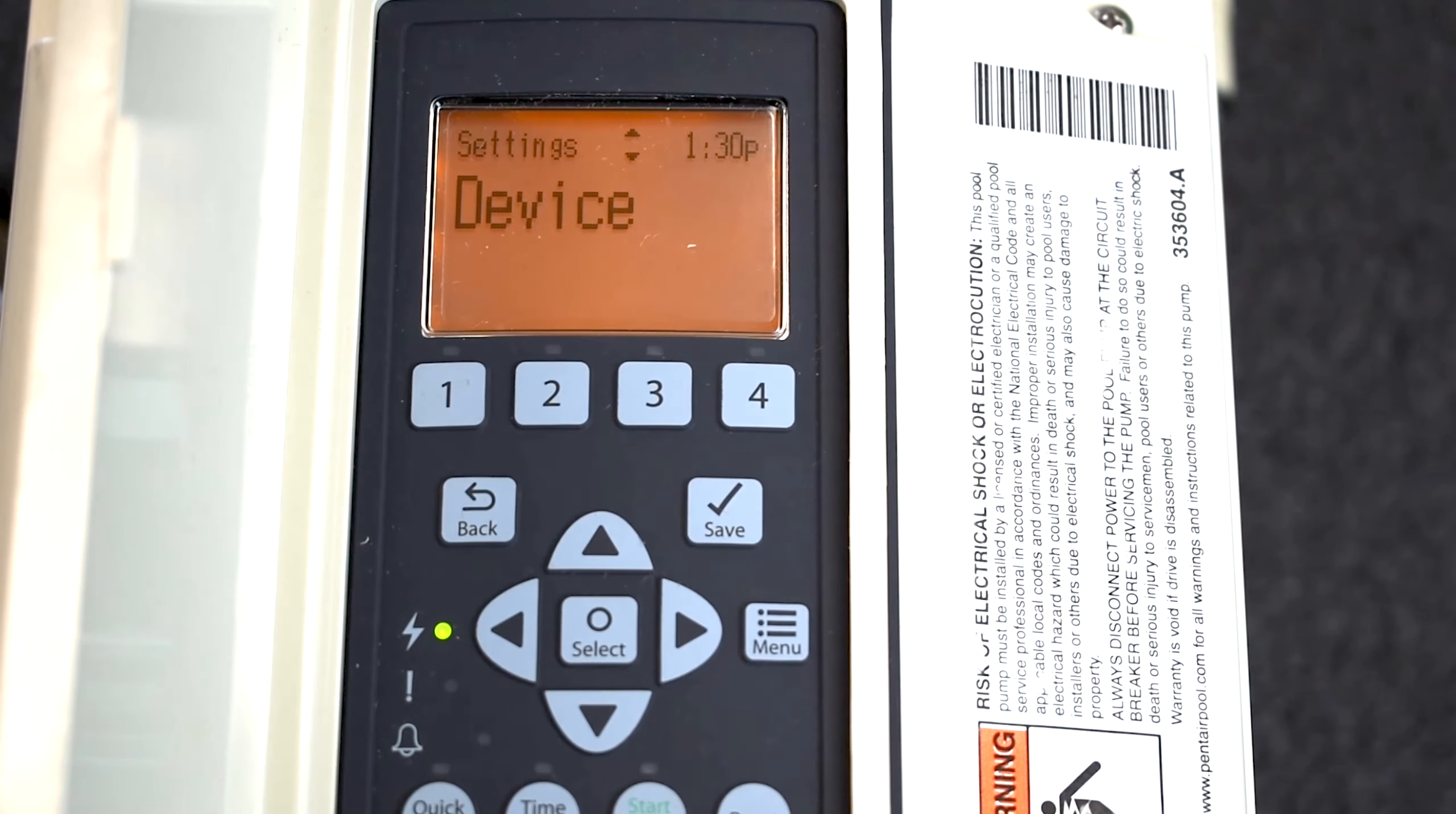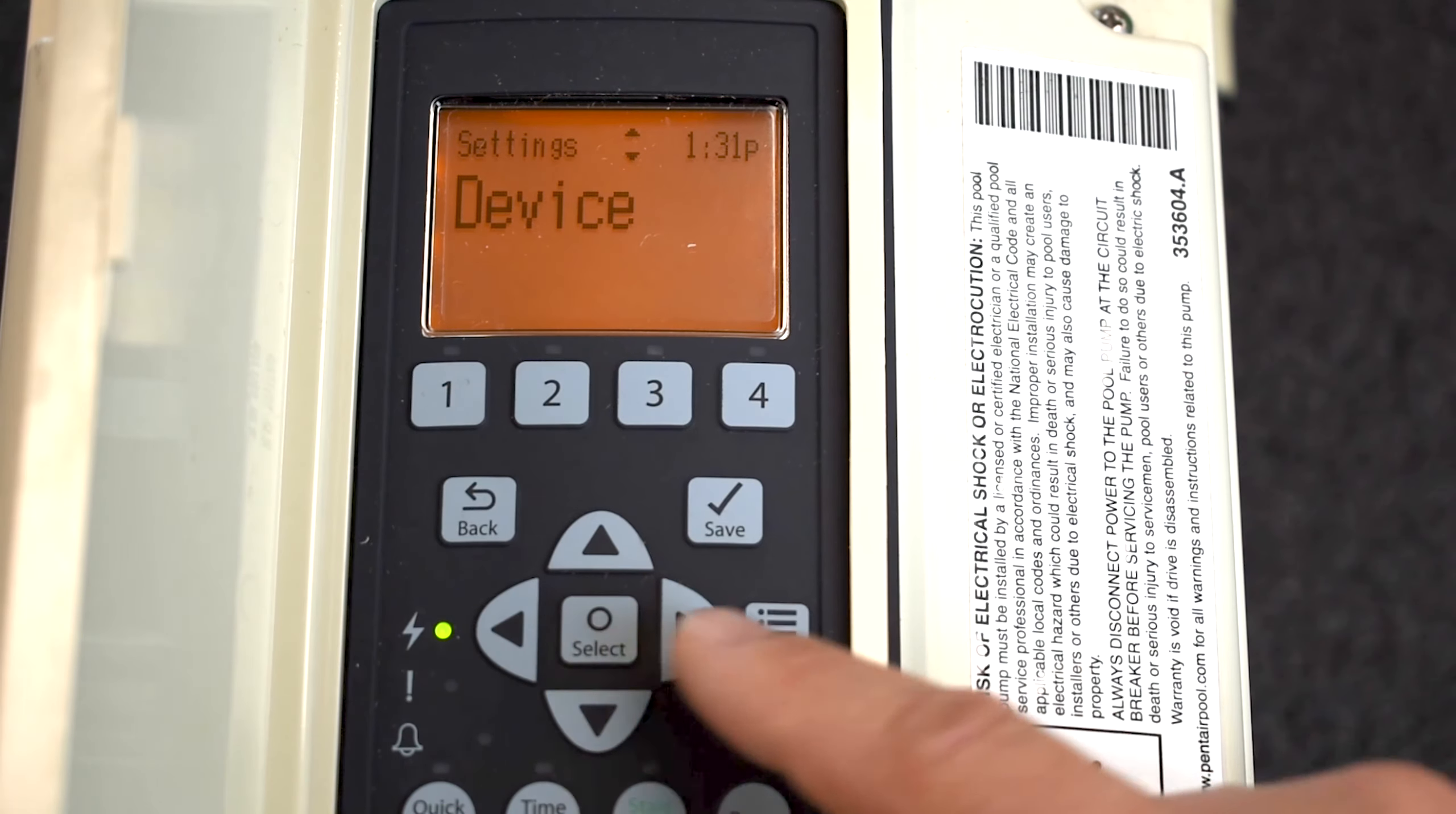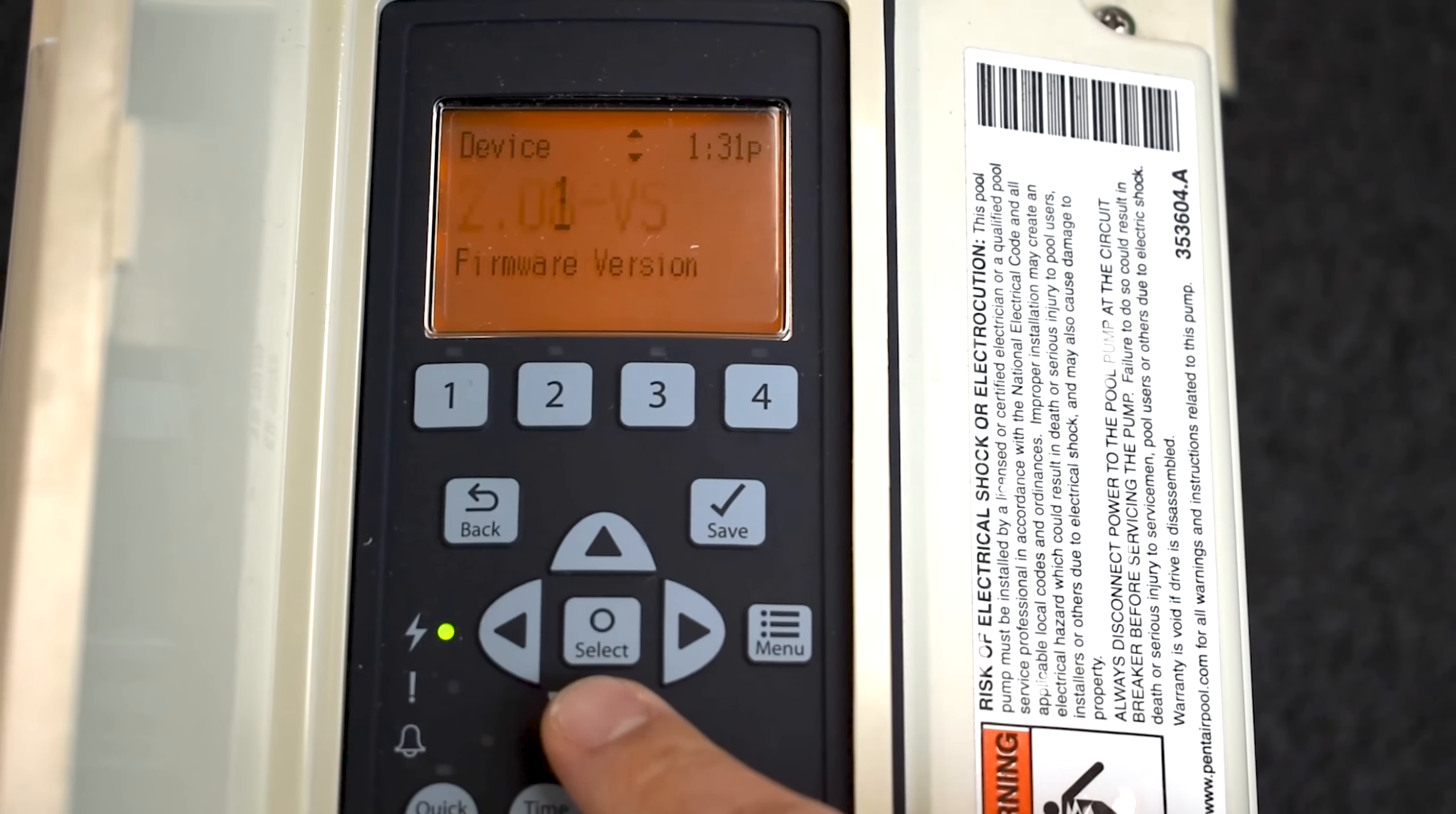So then device number. If you have an IntelliFlow or multiple IntelliFlows with automation and you want to put them all on, say, an IntelliCenter or an EasyTouch or something like that, you want to change the device numbers from one through four or one through eight I think you can do now.